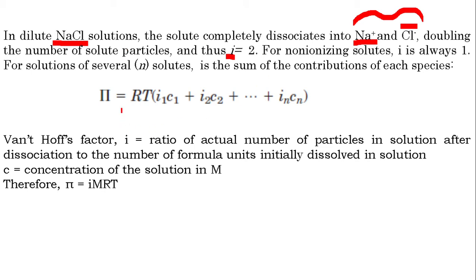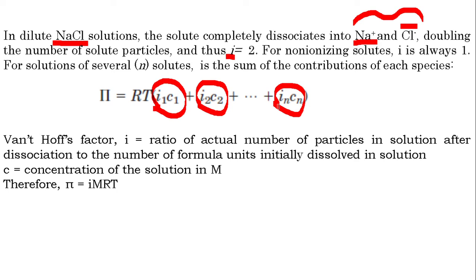So, π equals iC times RT, which equals i₁C₁ plus i₂C₂ and so on. If a solution contains different types of solutes, the osmotic pressure depends upon the sum total of osmolarity of each solute. We may also write it as π equals i times M times RT, where M is the molar concentration of solutes.